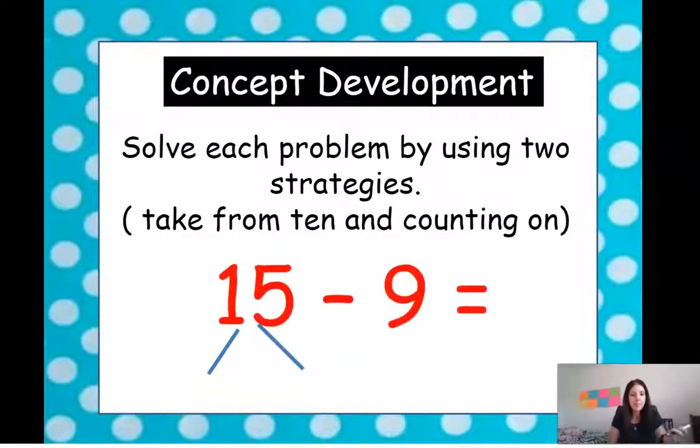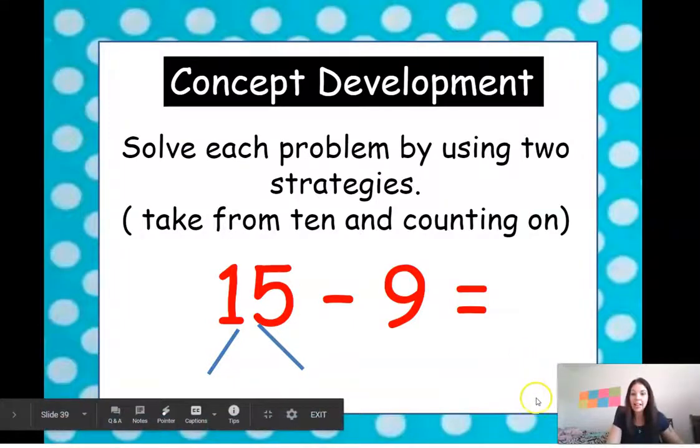Our next one is 15 minus 9. Punch it out and count on. Put your fist ready. We're going to count on. Starting at 9, we're going to count up to 15. 9, 10, 11, 12, 13, 14, 15. How many fingers do we have up? 1, 2, 3, 4, 5, 6. 6 fingers. So 15 minus 9 equals 6. Nice job.